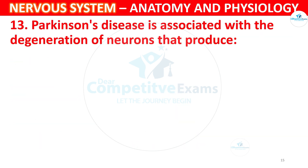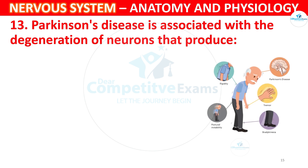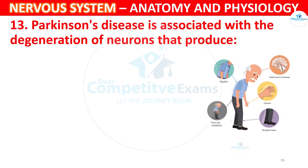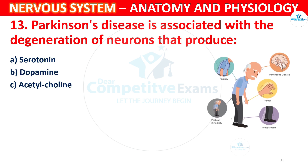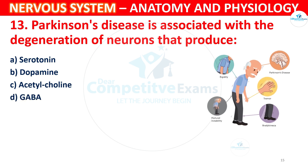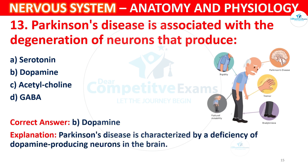Question 13: Parkinson's disease is associated with the degeneration of neurons that produce which substance? Options: A) Serotonin, B) Dopamine, C) Acetylcholine, D) GABA. The correct answer is B, Dopamine. Parkinson's disease is characterized by a deficiency of dopamine-producing neurons in the brain.